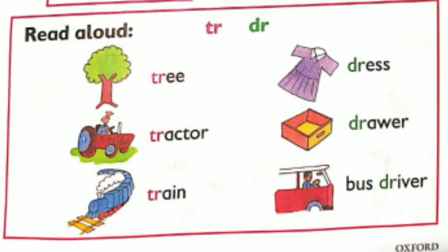Read aloud: TR, DR — tree, tractor, train, dress, driver, bus driver.